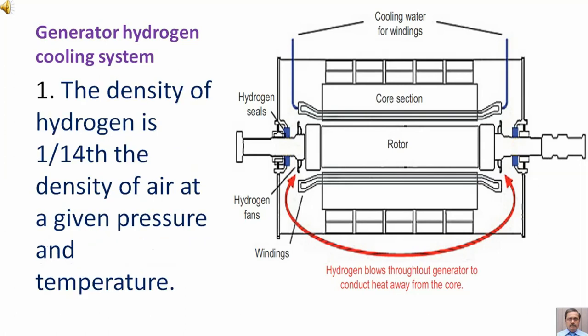The first reason: the density of hydrogen is 1 upon 14, the density of air at a given pressure and temperature.